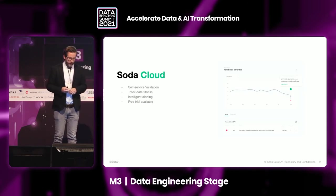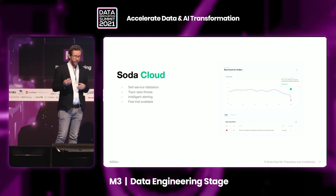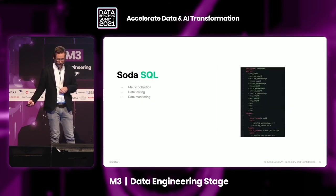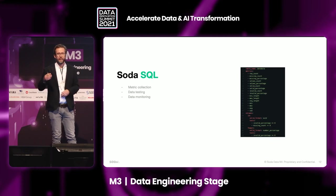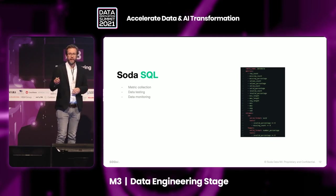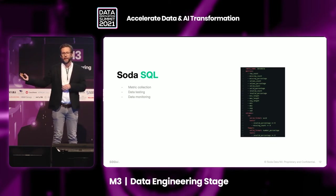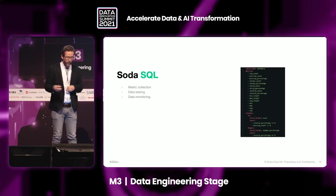Soda Cloud is that single pane of glass where you can do intelligent alerting and time series anomaly detection, which can be applied on any metric you collect from Spark or from your SQL engine. We also offer a free trial — you can just sign up and get started. For Soda SQL, that's an example of the YAML file you use to configure the metrics you collect and the test cases. By default, we look at things like valid, invalid, missing, min, max, averages, standard deviation, uniqueness, and histograms. Soda SQL takes these properties and translates them into highly optimized SQL specific to the data source you're using — for example, it would be different for BigQuery versus Redshift, and we take care of that for you.